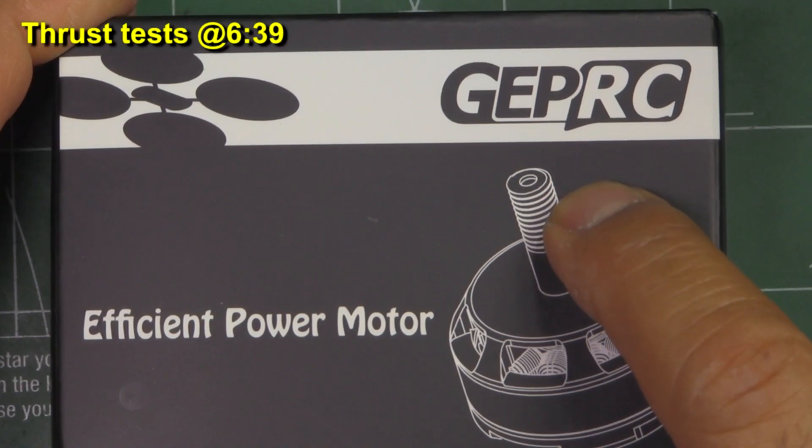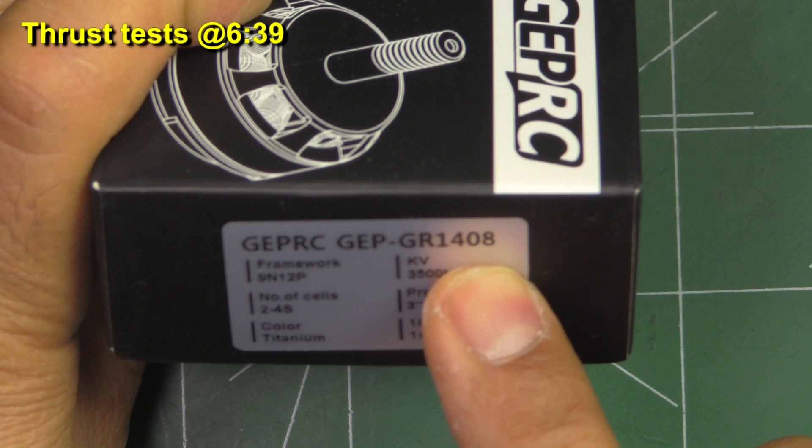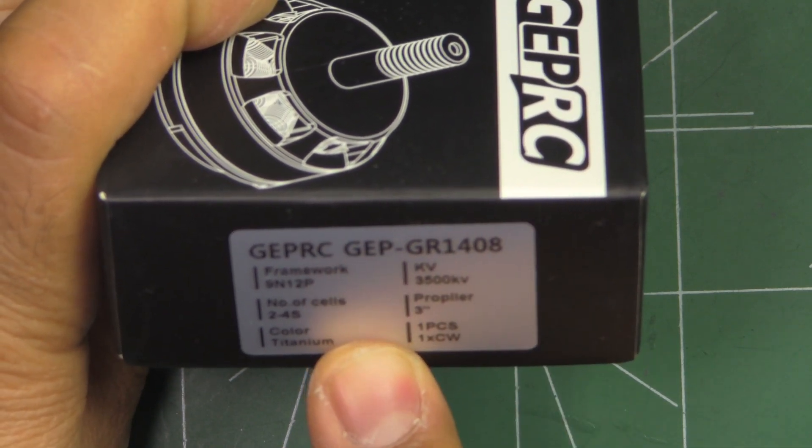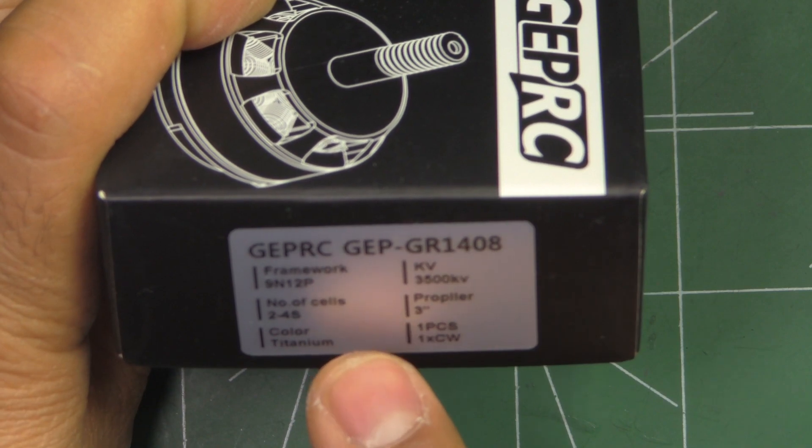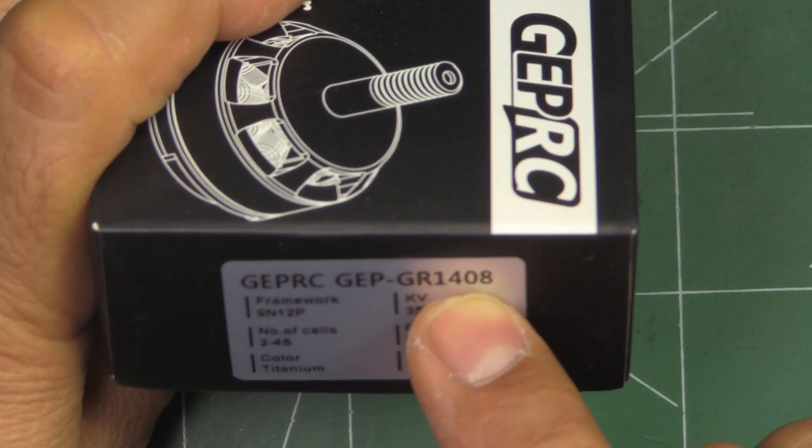All right, so here we have a GEPRC GEP-GR1408 motor, this one's 3500 kV. I saw this over at Banggood and ordered it because I was pretty curious to see how the 1408 compares to the 1407.